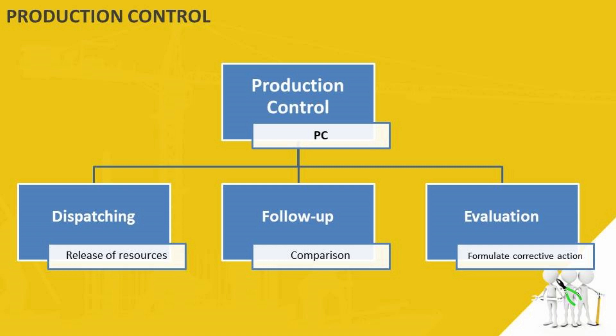Next, we have follow-up. Every production program involves determination of the progress of work and ensuring that production operations are taking place in accordance with the plan. This process is called follow-up. Follow-up is basically comparing actual performance to planned performance in order to identify discrepancies in production for appropriate corrective actions.